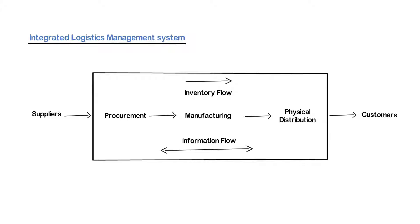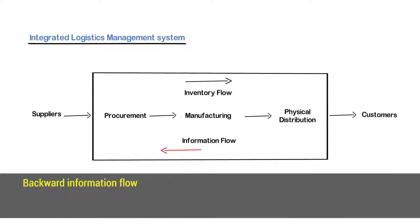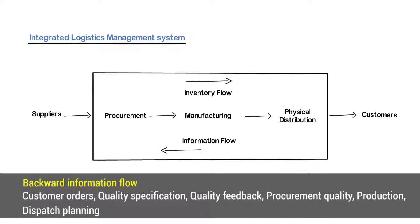In an Integrated Logistics System, the flow of information happens in both directions. The backward information flow provides information about the customers, their requirements, the customer orders, quality specification, quality feedback, procurement quality, production and dispatch planning to facilitate the coordination across the supply chain. This information helps in defining manufacturing quantity and purchase requirements down the supply chain.